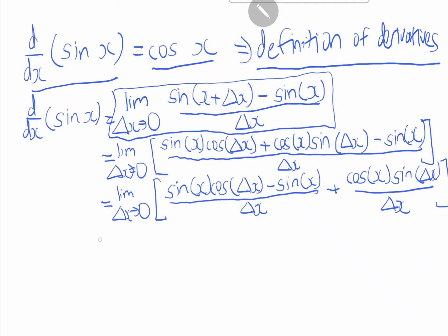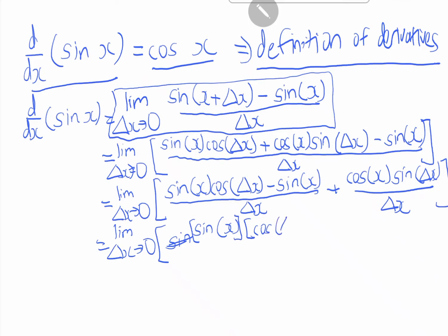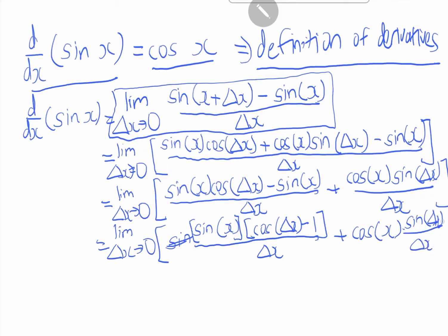Let's simplify further. We factorize the first part, giving us: the limit as delta x goes to 0 of sin x times (cos(delta x) minus 1) over delta x, plus cos x times sin(delta x) over delta x.